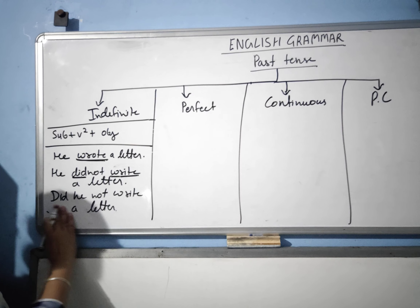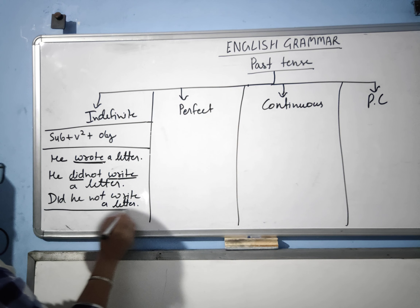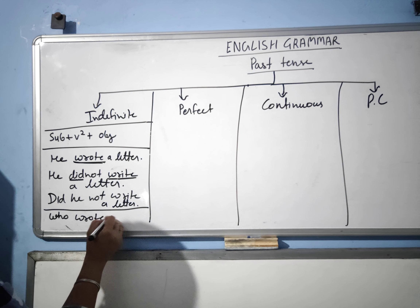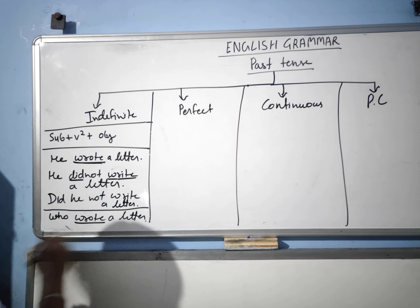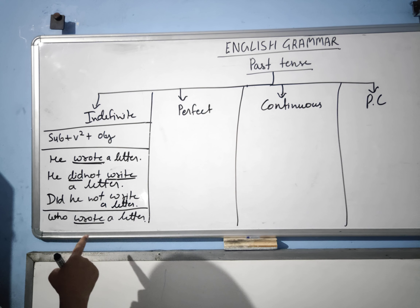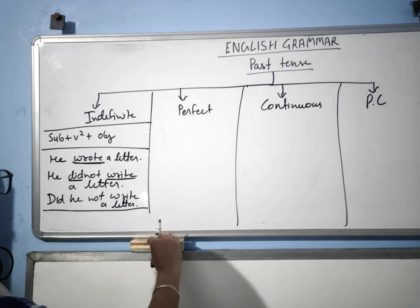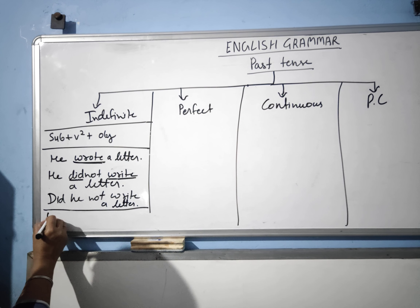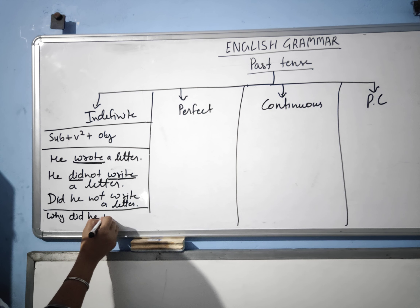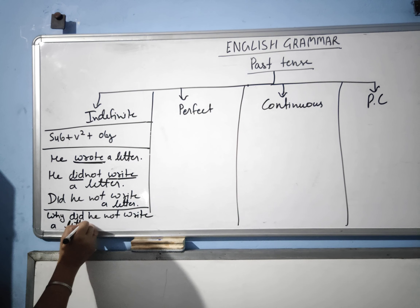In the second type of interrogative using WH words, you write the WH word at the beginning of the sentence. For example: 'Who wrote a letter?' 'Who' always works as a subject in the sentence, so you use only the verb second form with it. But if you use another WH word instead of 'who': 'Why did he not write a letter?'